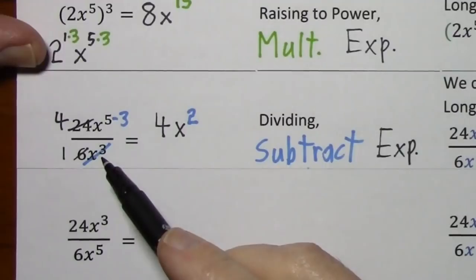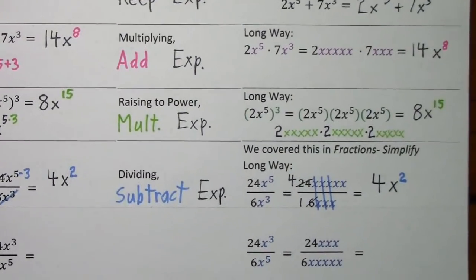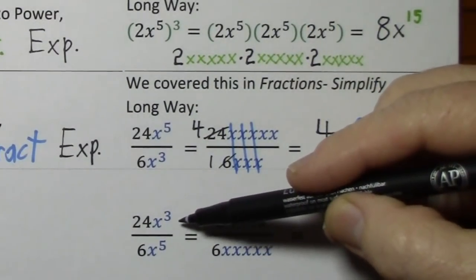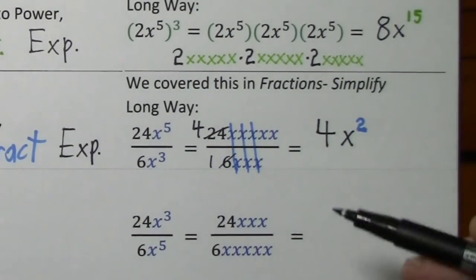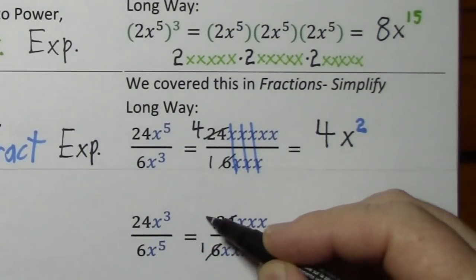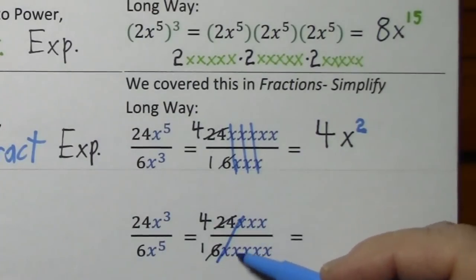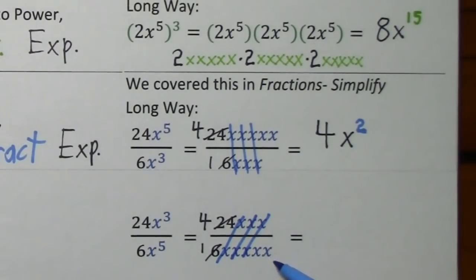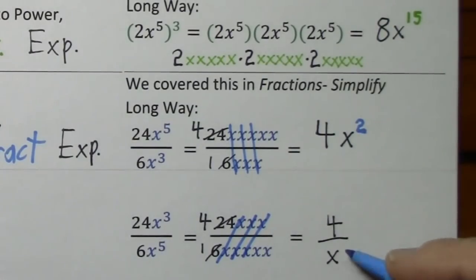To emphasize, you need to be careful you subtract the smaller from the larger. We'll look at another example over here. Again, 24x to the third can be written like this, 6x to the fifth right here. We'll cancel common factor of 6, divide by 6. And now we'll cancel common factor of x, x, and x. But you can see we're left with x squared in the denominator. So the simplified form is 4 over x squared.